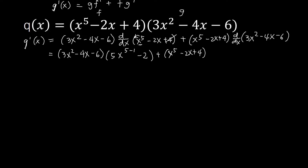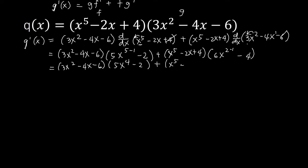Get the derivative of the second factor. We bring down our 2, so this will become 3 times 2, that's 6, and then x to the power of 2 minus 1. Minus 4 — this is with 1, so 4 times 1 is 4, and then x to the power of 1 minus 1 is 0, so x to the power of 0 is 1. And this constant term is 0. So simplifying: 3x squared minus 4x minus 6 times 5x to the power of 4 minus 2, plus x to the power of 5 minus 2x plus 4 times 6x minus 4.